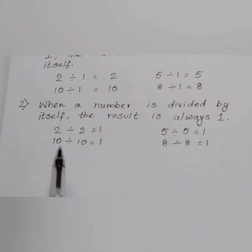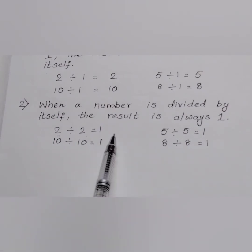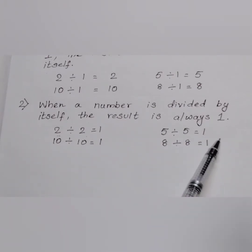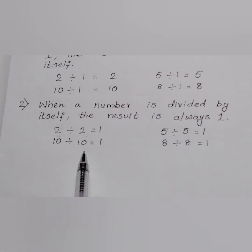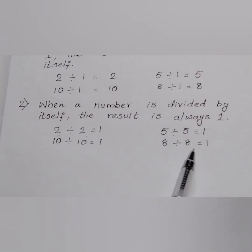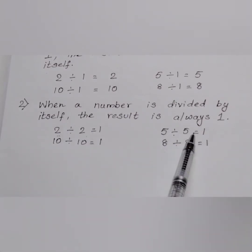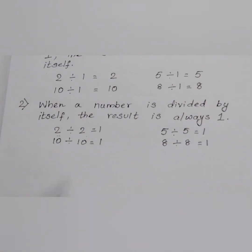Example: 2 divided by 2 is equal to 1. 5 divided by 5 is equal to 1. 10 divided by 10 is equal to 1. 8 divided by 8 is equal to 1. Means what? If the same numbers are divided, the result will always be 1. You can see the answer is always 1.